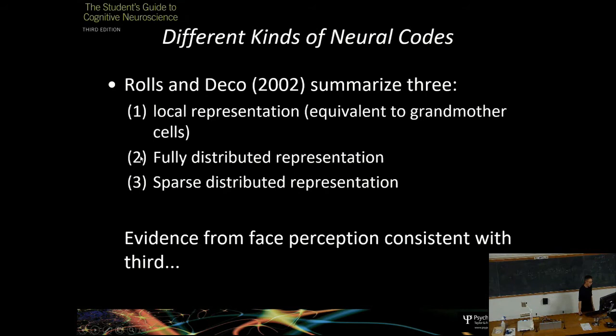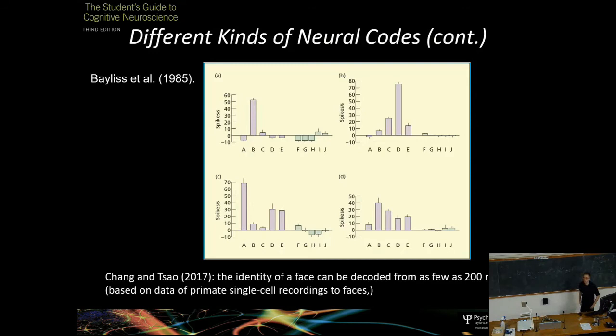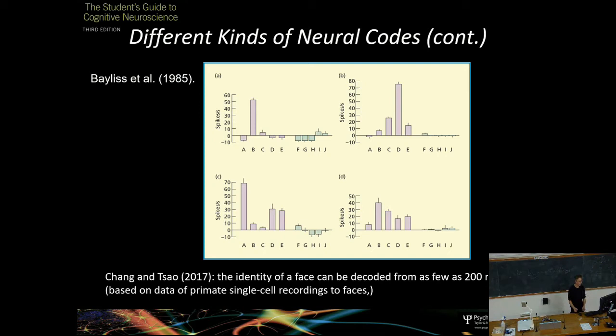This is evidence from recordings in primate cortex, where A, B, C, D, and E are five different faces, along with five objects. Four neurons are shown. All of these neurons prefer faces — meaning they produce action potentials to faces but not to other objects. None of these neurons show much responsiveness to non-face objects. In other parts of the brain you would get the reverse. They've been done with both monkey and human faces, and these neurons tend not to care so much about that distinction.